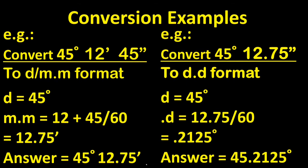Let's look at these examples. We're going to start by converting 45 degrees, 12 minutes, 45 seconds to the degree decimal minute format. The degree remains the same at 45 degrees. For the decimal minute, the minute part remains the same at 12, but the decimal part is the seconds divided by 60, or 12.75. So the answer is 45 degrees, 12.75 minutes. Now let's convert 45 degrees, 12.75 minutes to decimal degree format. The degree remains 45, and the decimal degree is calculated by dividing 12.75 by 60, which is 0.2125. The answer is 45.2125 degrees.